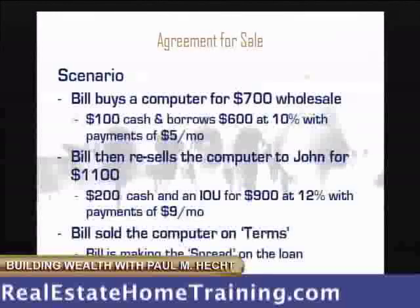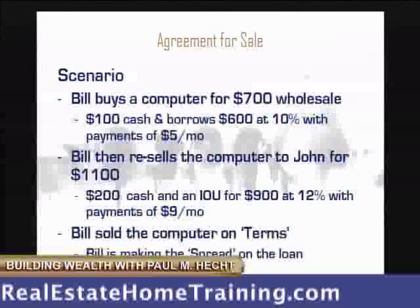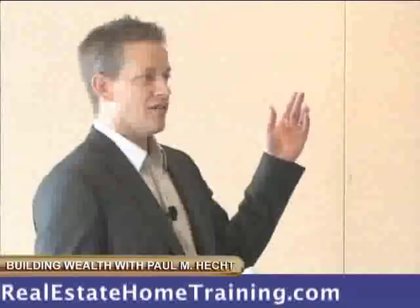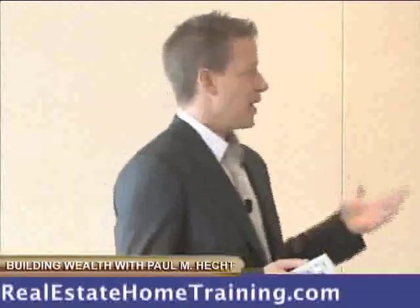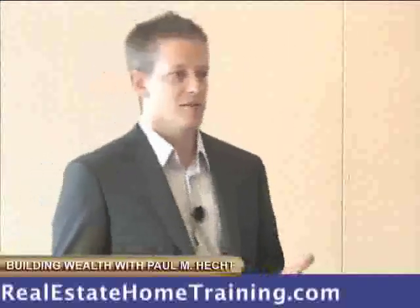So now they both have loans. John owes Bill more than what Bill owes to his guy. John gives Bill $200, IOU for $900 at 12% interest — a little higher rate. So Bill is making a spread: he's receiving $9 and paying $5, keeping $4. Bill just sold the computer on terms as opposed to price.